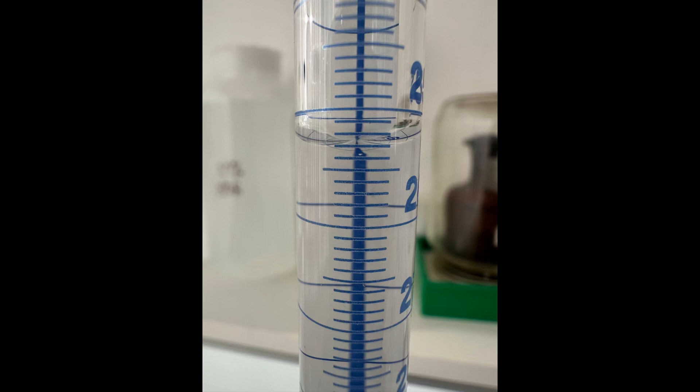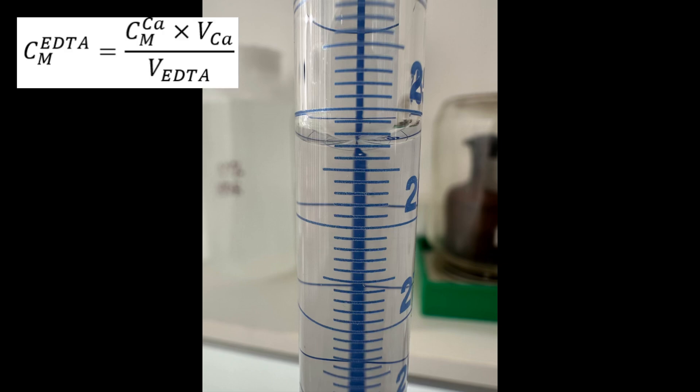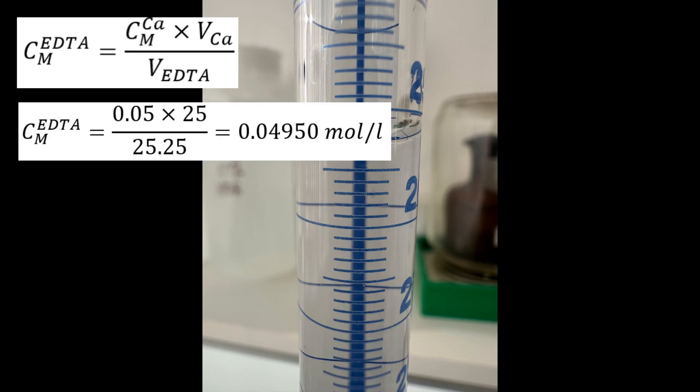To calculate the final concentration of the EDTA solution, we use the following formula. In the numerator, we have the molar concentration of the calcium solution times the volume of calcium solution used. In the denominator, we have the volume of EDTA solution used in the determination. When we replace the terms with the actual values, we get the result for the molar concentration of the EDTA solution.